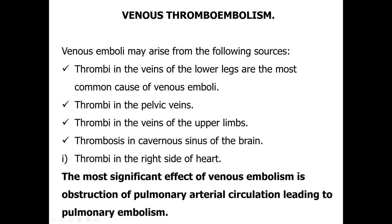Venous thromboembolism: venous emboli may arise from the following sources. Thrombi in the veins of the lower legs are the most common cause. Other sources include thrombi in the pelvic veins, veins of the upper limbs, cavernous sinus of the brain, and the right side of the heart. The most significant effect of venous embolism is obstruction of pulmonary arterial circulation, leading to pulmonary embolism.